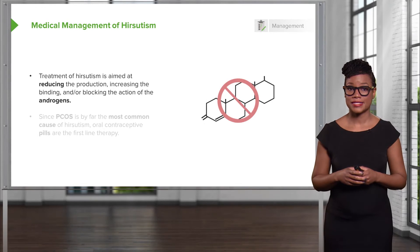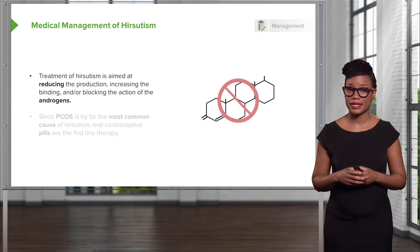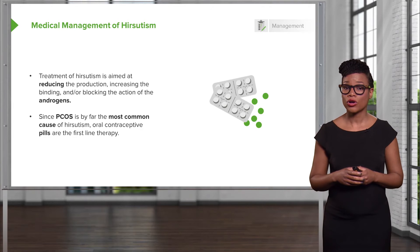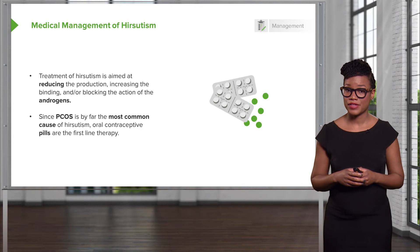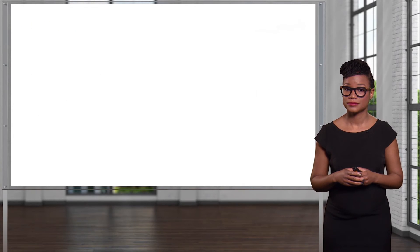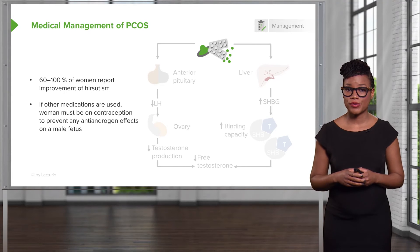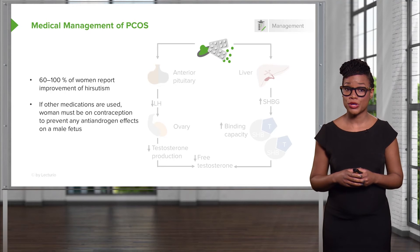Treatment of hirsutism is aimed at reducing the production or increasing the binding and/or blocking the action of androgens. Since PCOS is by far the most common cause of hirsutism, oral contraceptive pills are the first-line therapy. 60 to 100% of women who report hirsutism and then use OCPs have subsequent improvement.